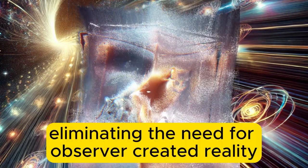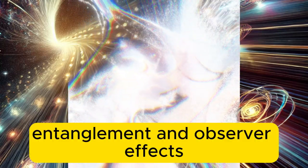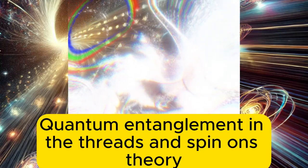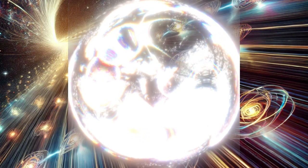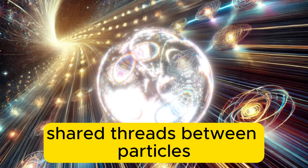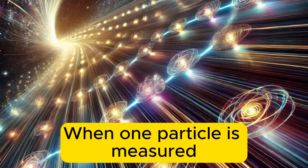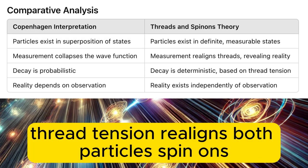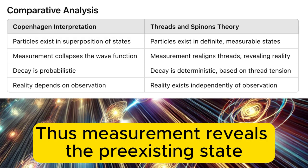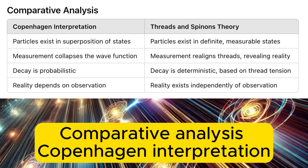Quantum entanglement in the threads and spin-ons theory is explained by shared threads between particles, where spin-ons rotate in opposite synchronization. When one particle is measured, thread tension realigns both particles' spin-ons. Thus, measurement reveals the pre-existing state rather than creating it.